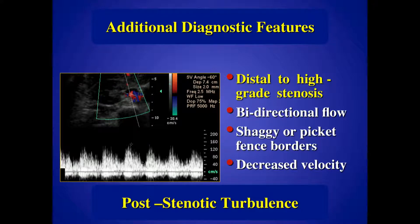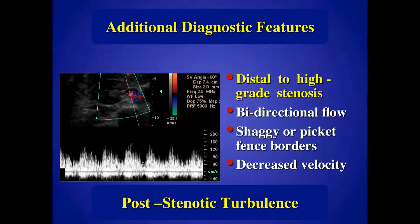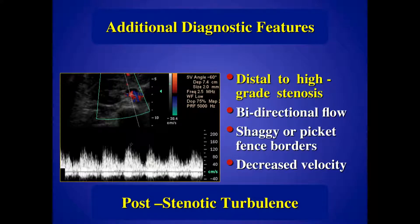We see these distal to just about every significant stenosis. It's bidirectional because when those red blood cells come spilling out of the stenosis, they're moving at different velocities in different directions, giving you that chaotic appearance. Some people call it shaggy picket fence; my friends at Cleveland Clinic call it Bart Simpson hair. They tend to have very low velocities because as they shoot out, they're losing energy, pressure, and velocity. You can go from a very high velocity waveform in the stenosis to this turbulent low velocity waveform in the post-stenotic space.